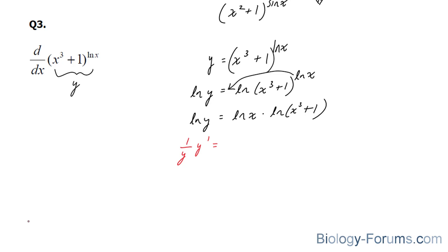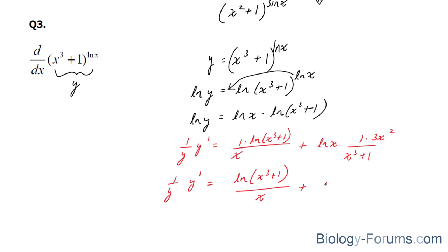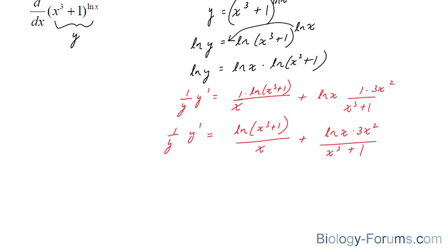We'll use the product rule once again like we did in questions 1 and 2. We'll start off by finding the derivative of ln x, which is 1 over x, leaving ln(x³+1) the way it is. And then we add ln x times the derivative of ln(x cubed plus 1), which is 1 over (x cubed plus 1) times the derivative of that, equal to 3x squared. Cleaning this up, we end up with: 1 over y · y prime = ln(x³+1)/x + ln x · 3x²/(x³+1).